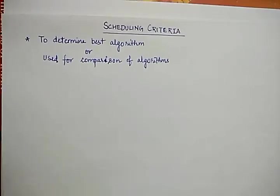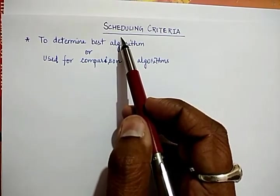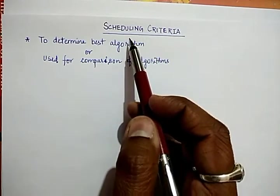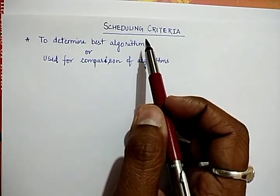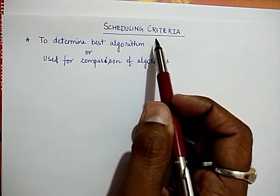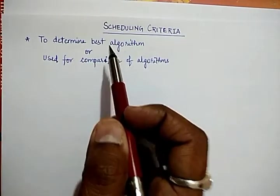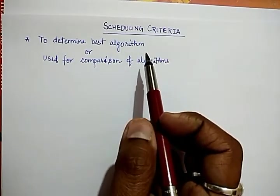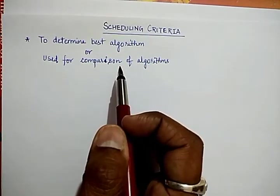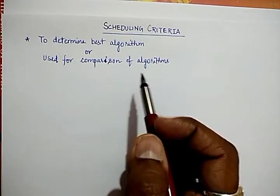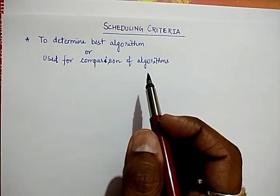In today's video lecture we are going to discuss our next topic which is called scheduling criteria. Before discussing the different criterias, you have to understand the purpose of these criterias. The purpose is to determine the best algorithm among various defined algorithms, or we can simply use it for the comparison of algorithms to determine the best among all.